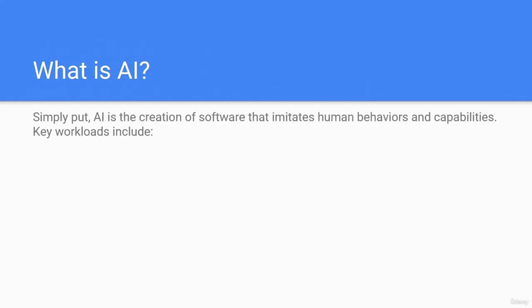What is AI, or artificial intelligence? Simply put, AI is the creation of software that imitates human behaviors and capabilities.